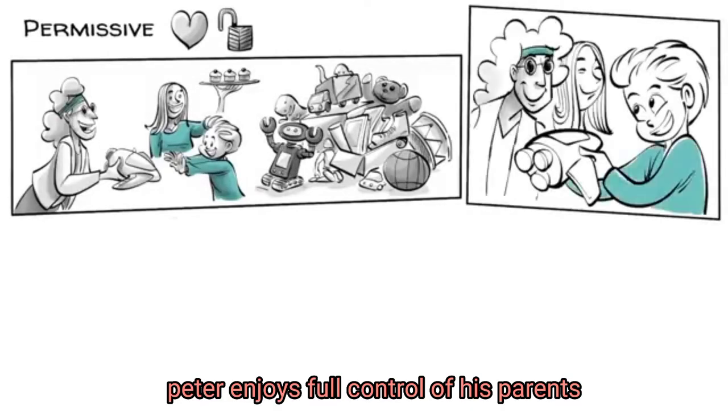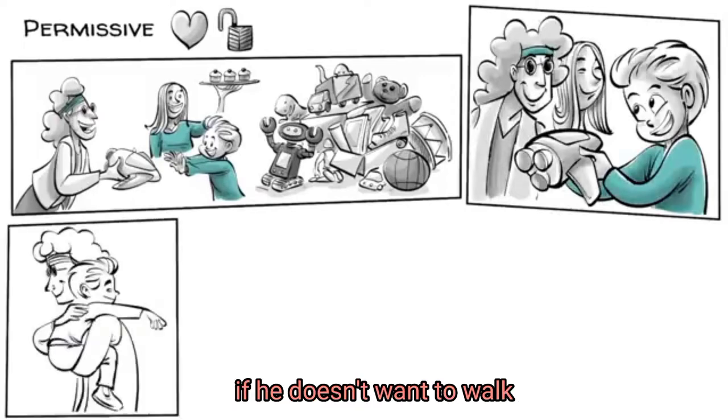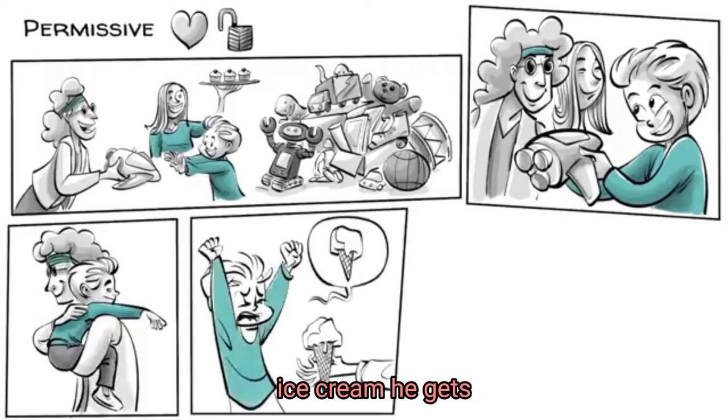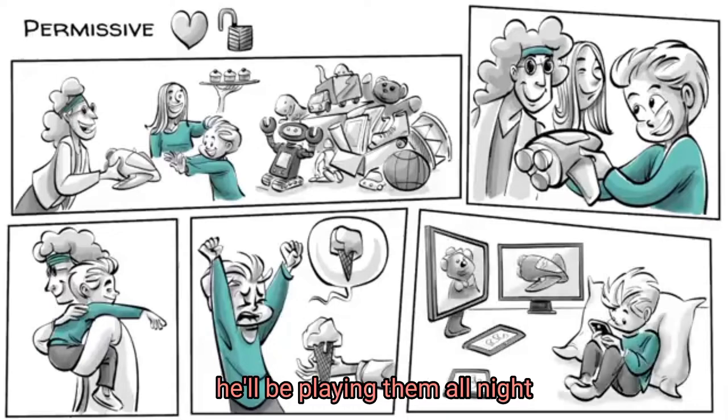Peter enjoys full control over his parents and gets whatever he wants. If he doesn't want to walk, he'll be carried. If he wants ice cream, ice cream he gets. If he wants to play games, he'll be playing them all night.